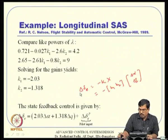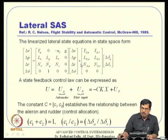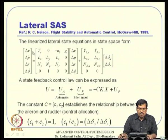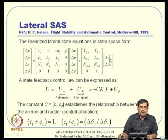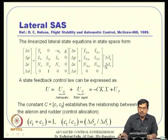Lateral stability augmentation is very similar. The state vector includes V, P, R, and phi. The difference here is that both Aileron and Rudder are equally effective and equally fast, so we cannot neglect one over the other; both must be accounted for simultaneously. With multiple control inputs, pole placement requires control allocation, which is the main difference from the longitudinal single-input case.